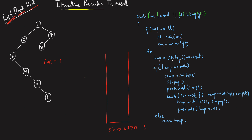Stack.push(curr). So you take node 1 and push it. Then curr = curr.left, so curr goes to two. Again, curr is not null, so stack.push(curr) — push two. Then curr = curr.left, which becomes null.